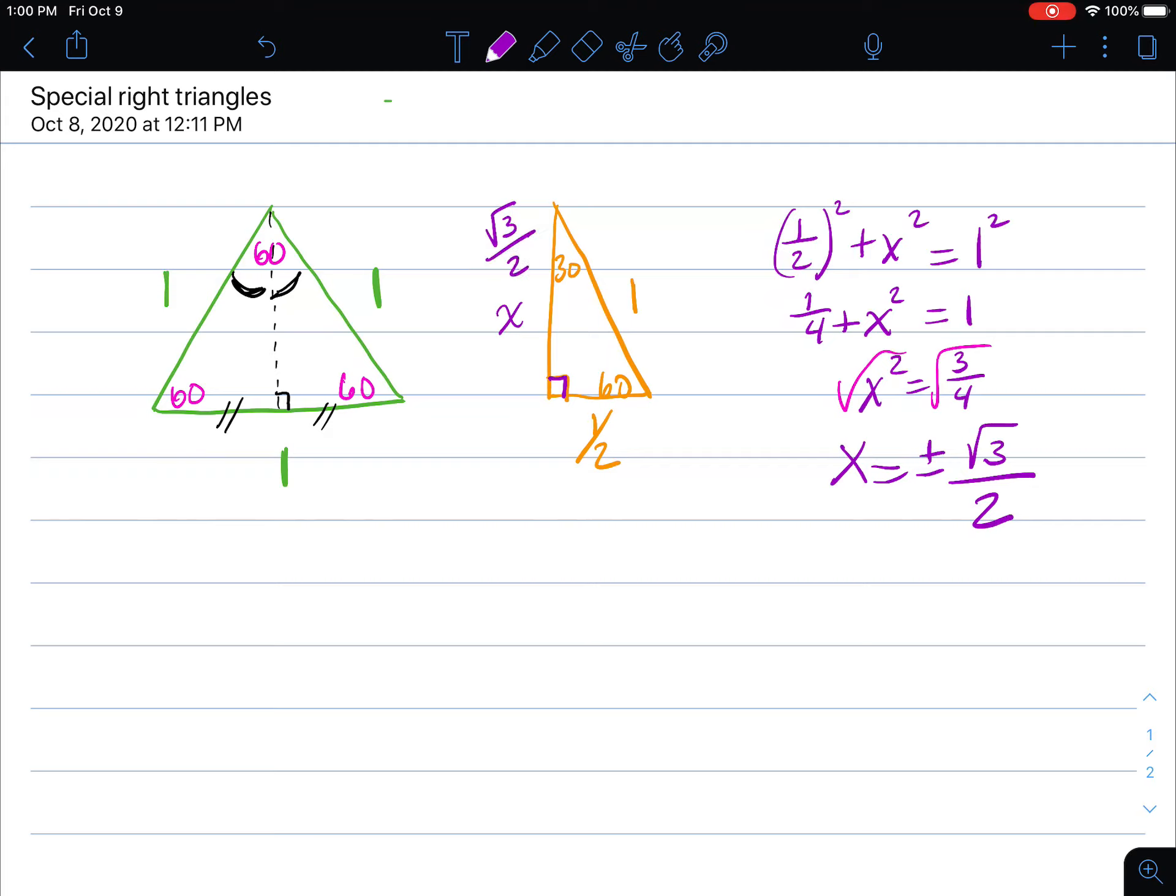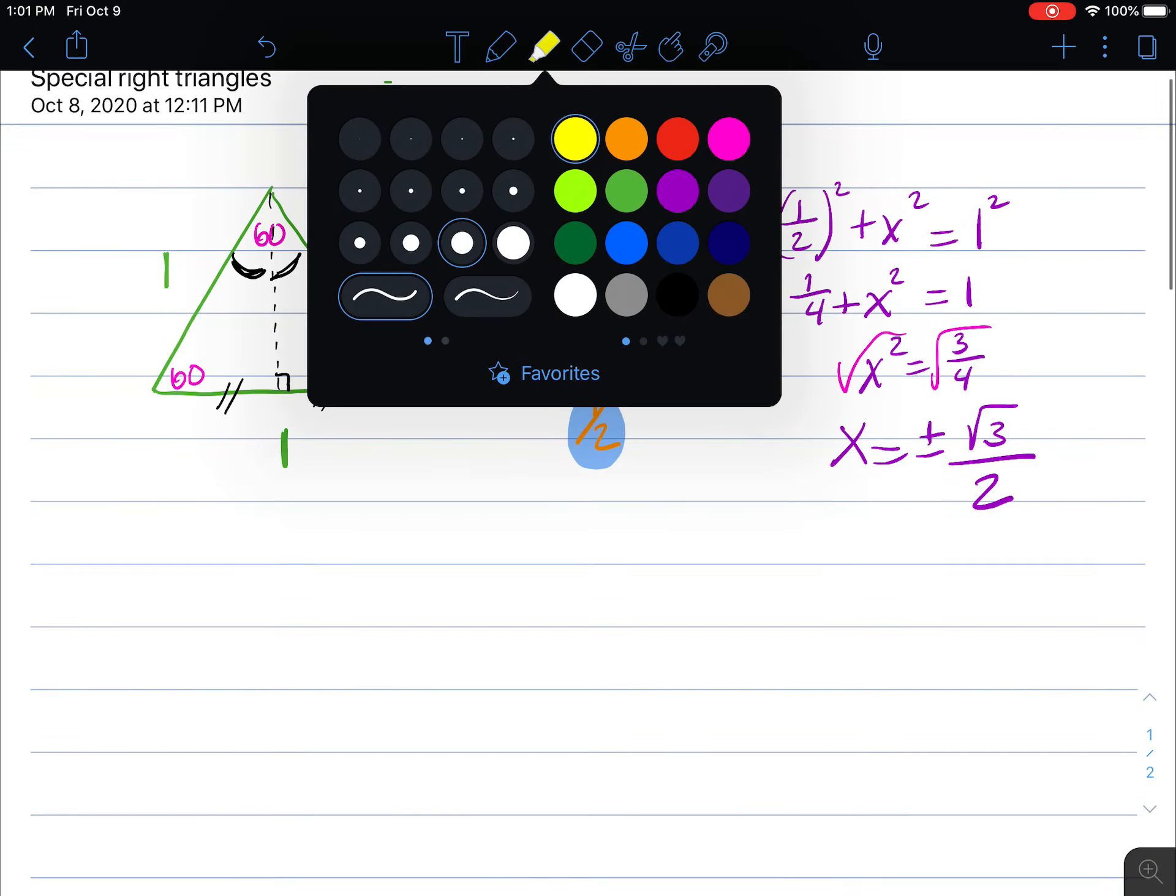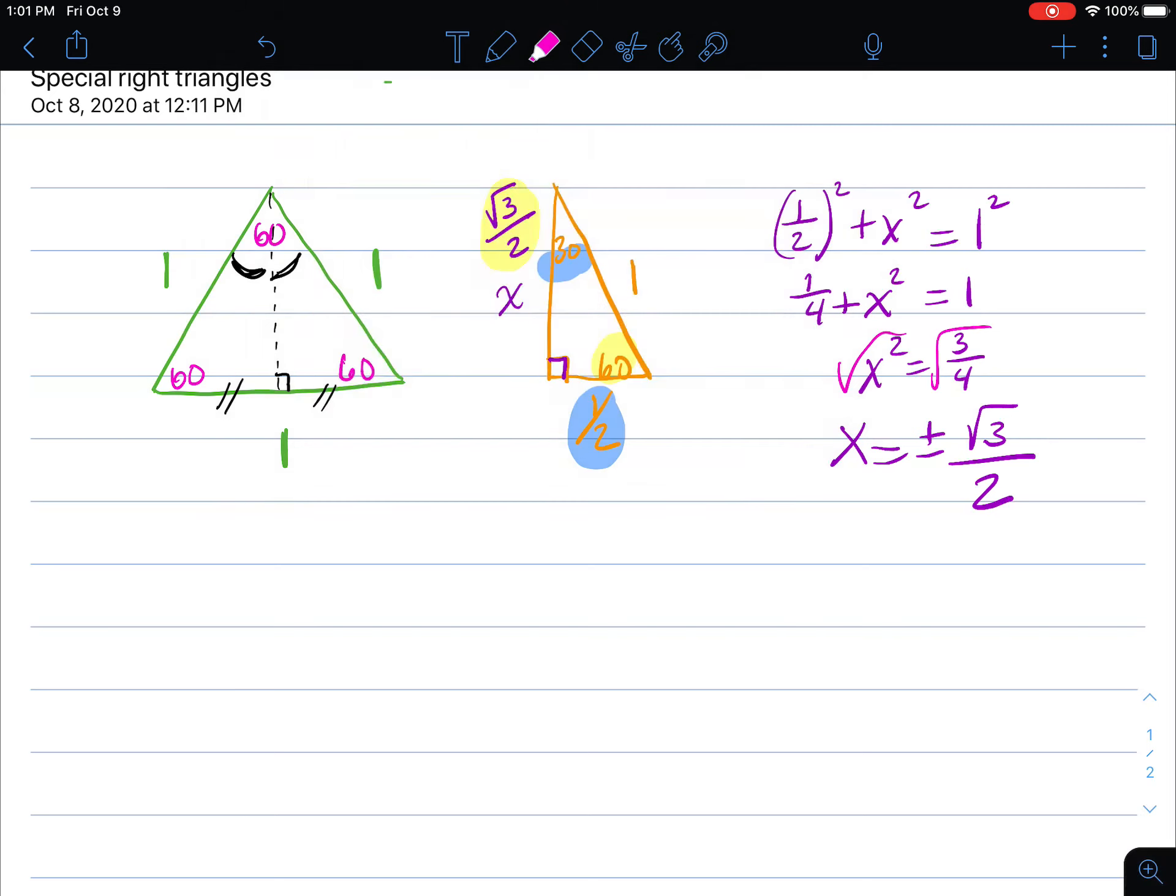Now since we're talking about the side of a triangle we know that we can only use the positive radical three over two. Okay, so the smallest angle is here in this triangle and it has the smallest side. The second biggest angle is 60 and it has the second largest side. And then of course the largest angle, 90 degrees, has the largest length.